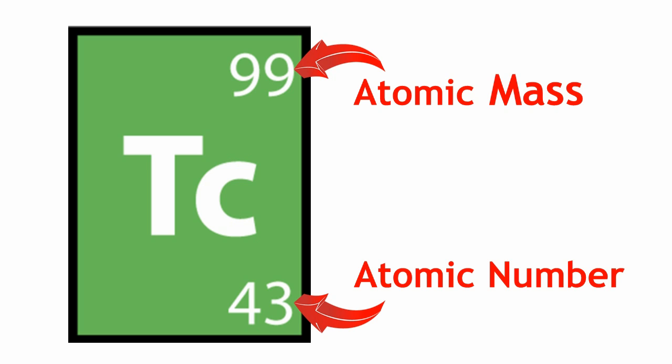These are different because the atomic mass is the total mass of the atom determined by its number of protons and neutrons, whereas the atomic number is the number of protons in the atom.